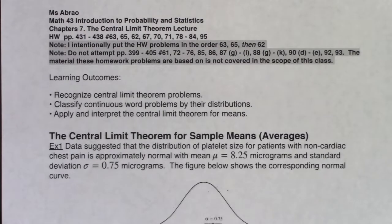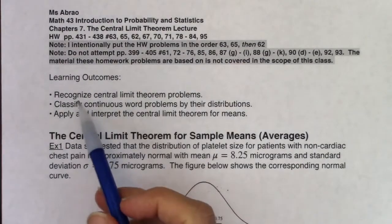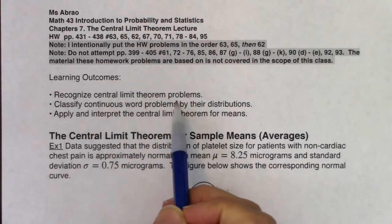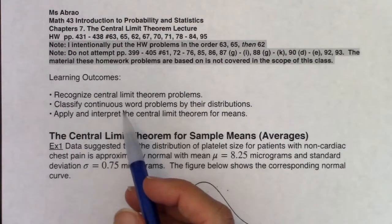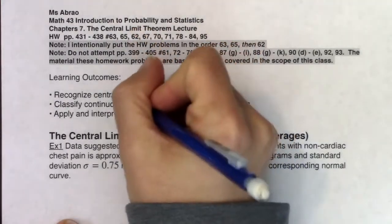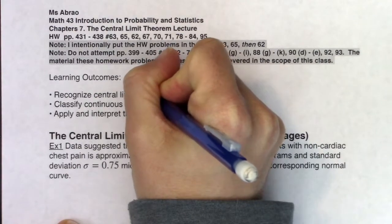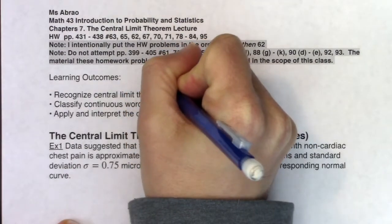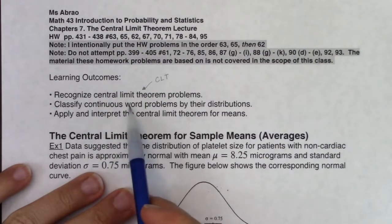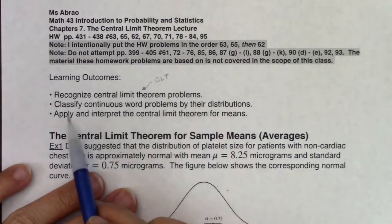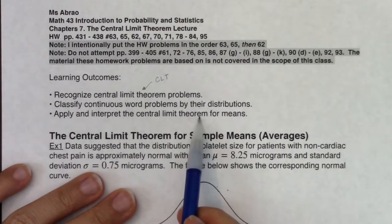Hey Math43, let's start to look at Chapter 7 and the Central Limit Theorem. We have a few learning outcomes. We want to recognize Central Limit Theorem problems, meaning we have to look for certain vocab terms that will help us say, 'I'm using the Central Limit Theorem.' I will sometimes abbreviate that with the acronym CLT. We will classify continuous word problems by their distributions, and we will apply and interpret the Central Limit Theorem for means.